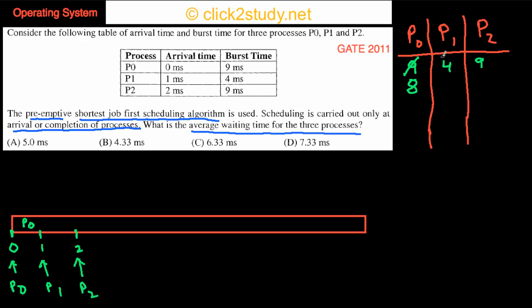The bursts left are eight, so that means P0 will be preempted. It will be kicked out by P1, and the CPU will be given to P1 from here.